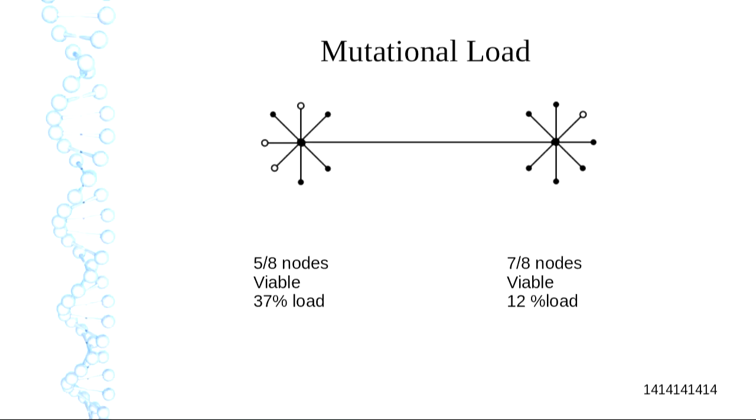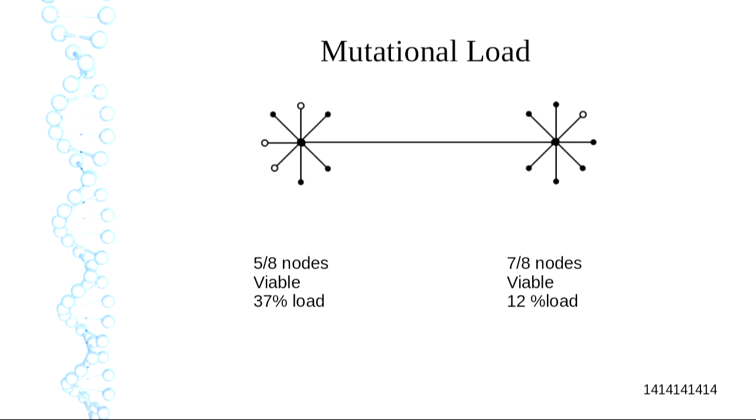Now I've got my network with nodes, I can mutate them. If a genome has a bit string of length nine, it's got nine possible neighbors — I can flip nine bits. How many of those are viable? That's the load. If I randomly choose a bit and flip it, how many times does it kill it? That's what we call mutational load. If you have lots of viable neighbors you have low load. Load is one minus density.